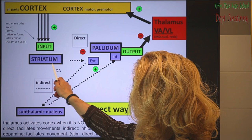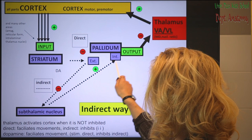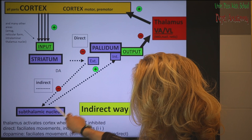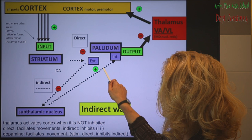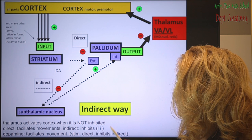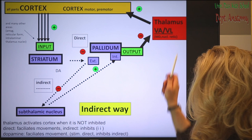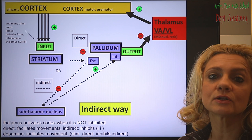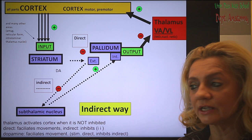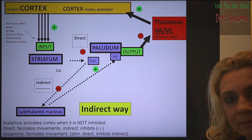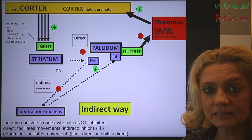In the indirect pathway, the input and output are not directly connected but go through the subthalamic nucleus. From the striatum there is input to the external part of the pallidum, then through the subthalamic nucleus to the internal part of the pallidum. This pathway is inhibitory, inhibitory, and stimulatory — meaning the internal pallidum is stimulated, its inhibitory output is enhanced, and the thalamus is inhibited and unable to activate the cortex. So the indirect pathway inhibits movement — 'II' stands for indirect inhibition.